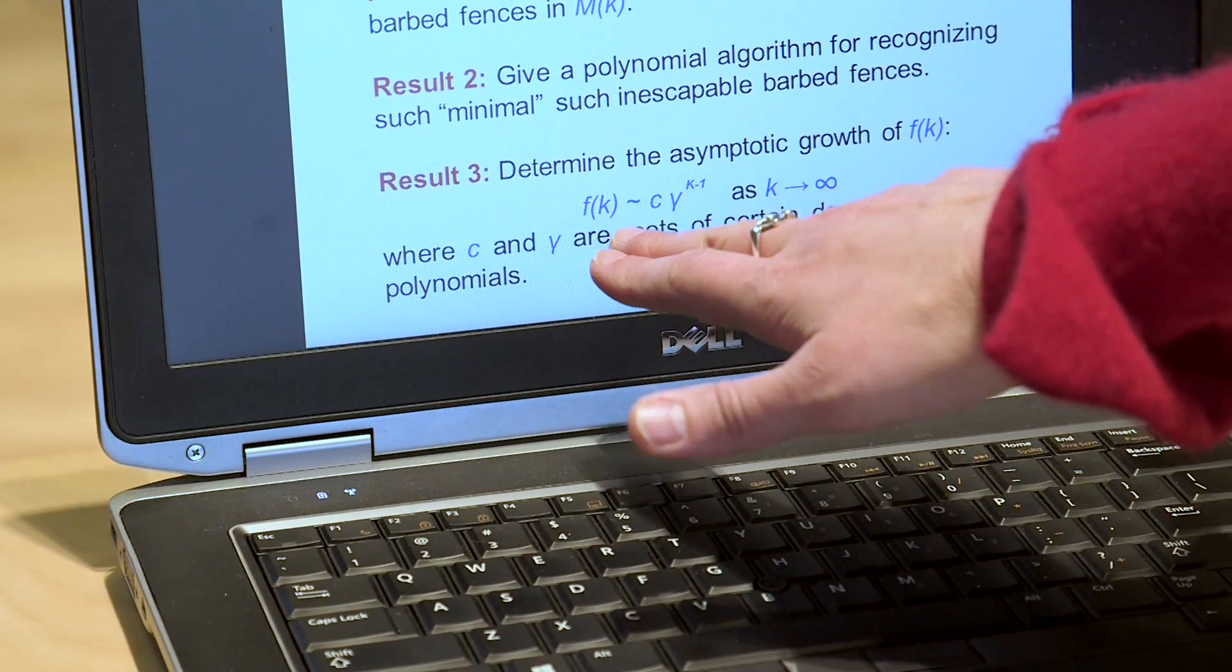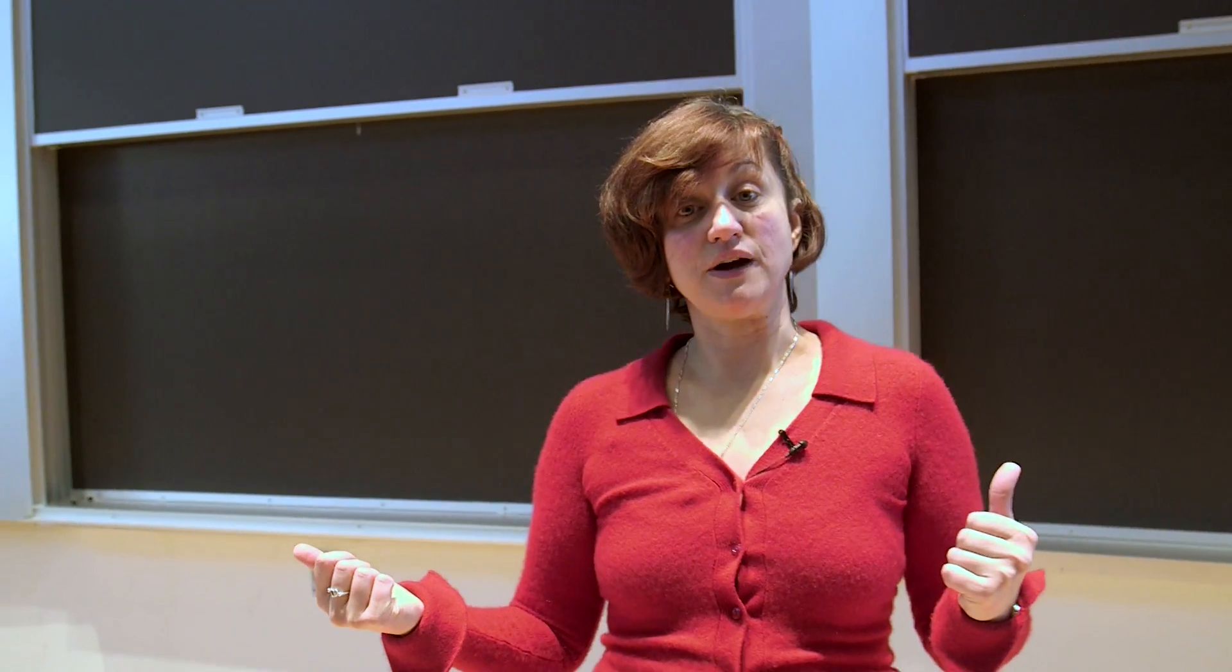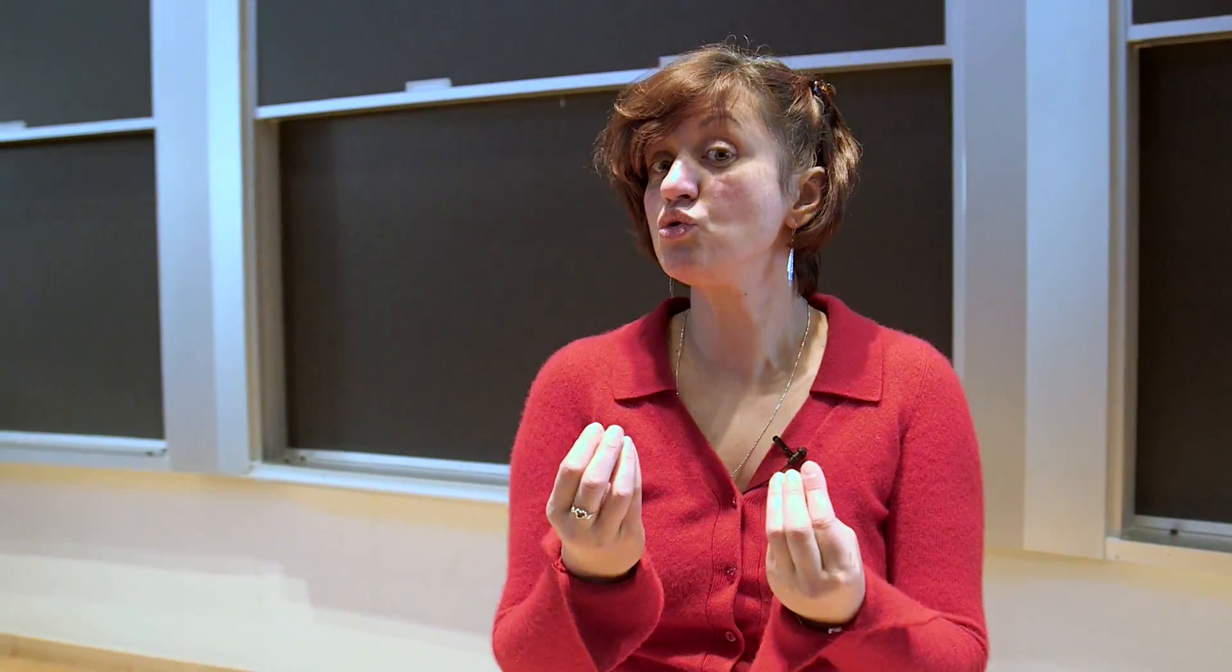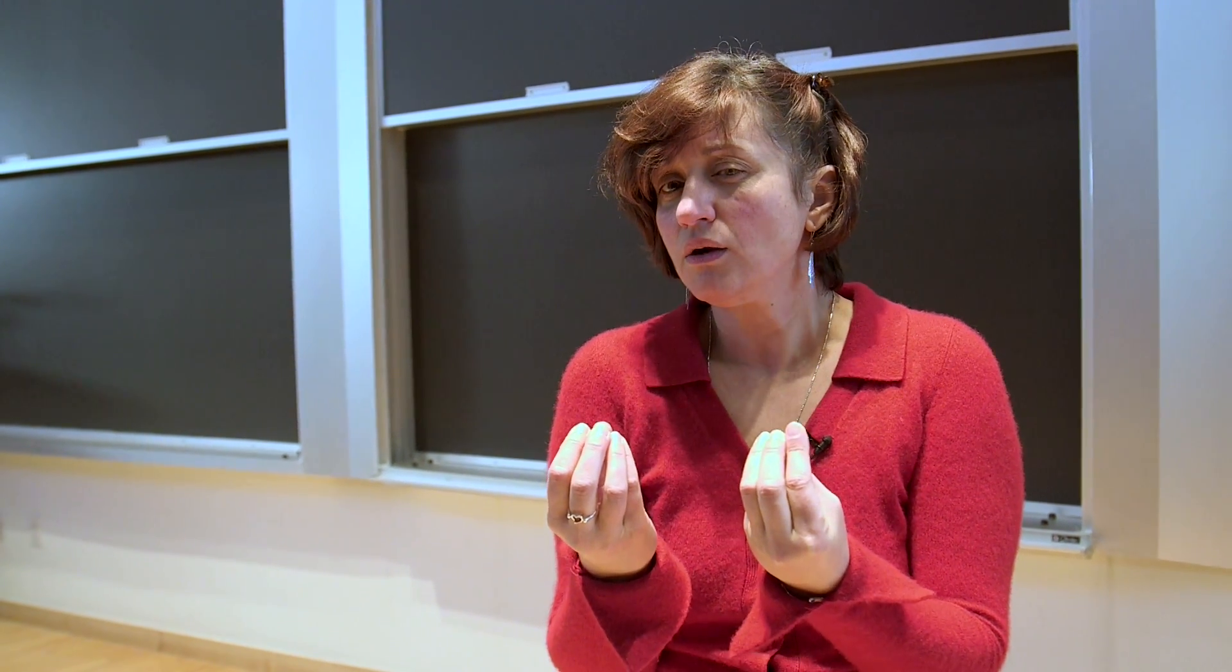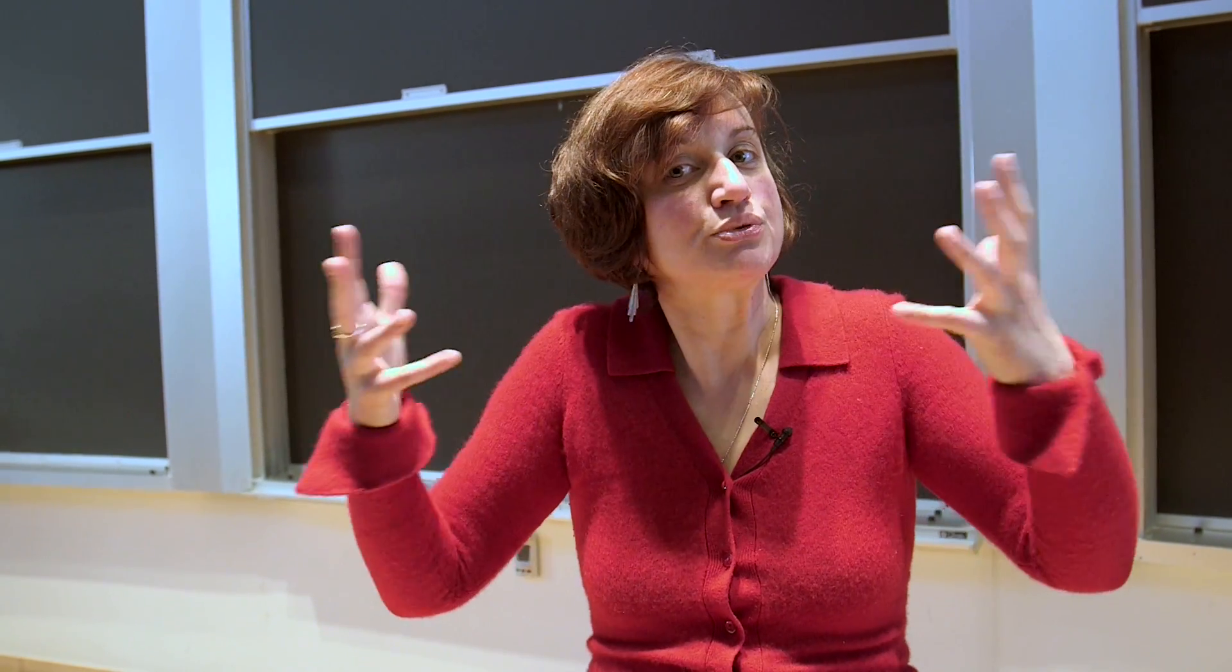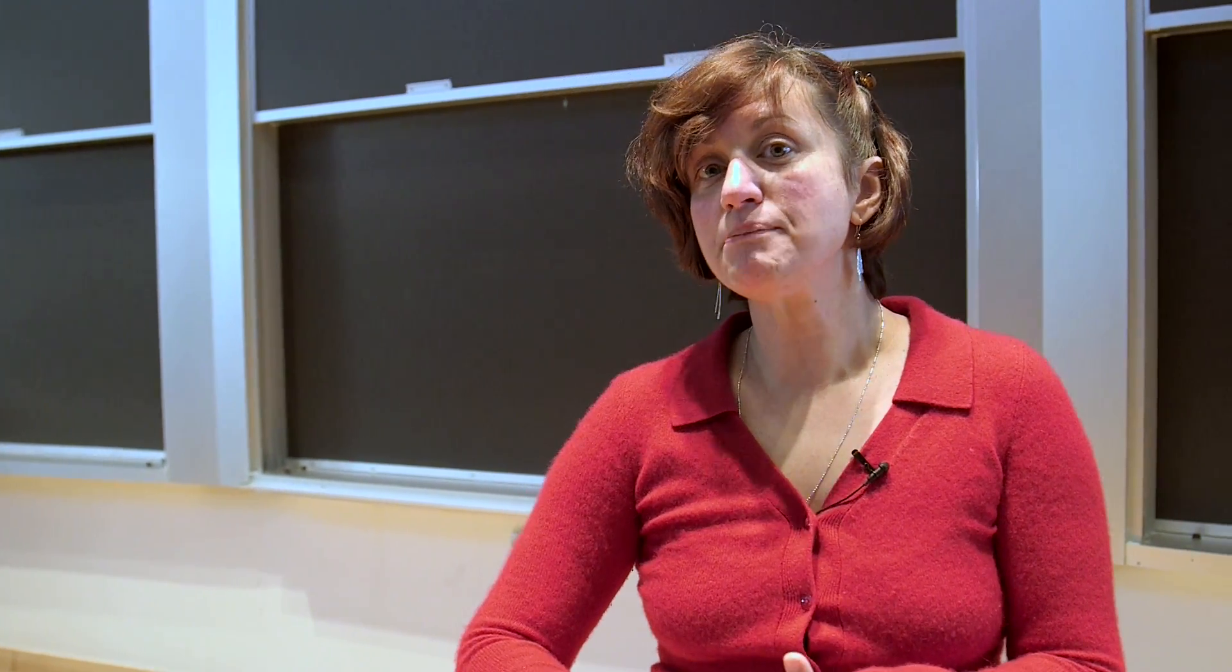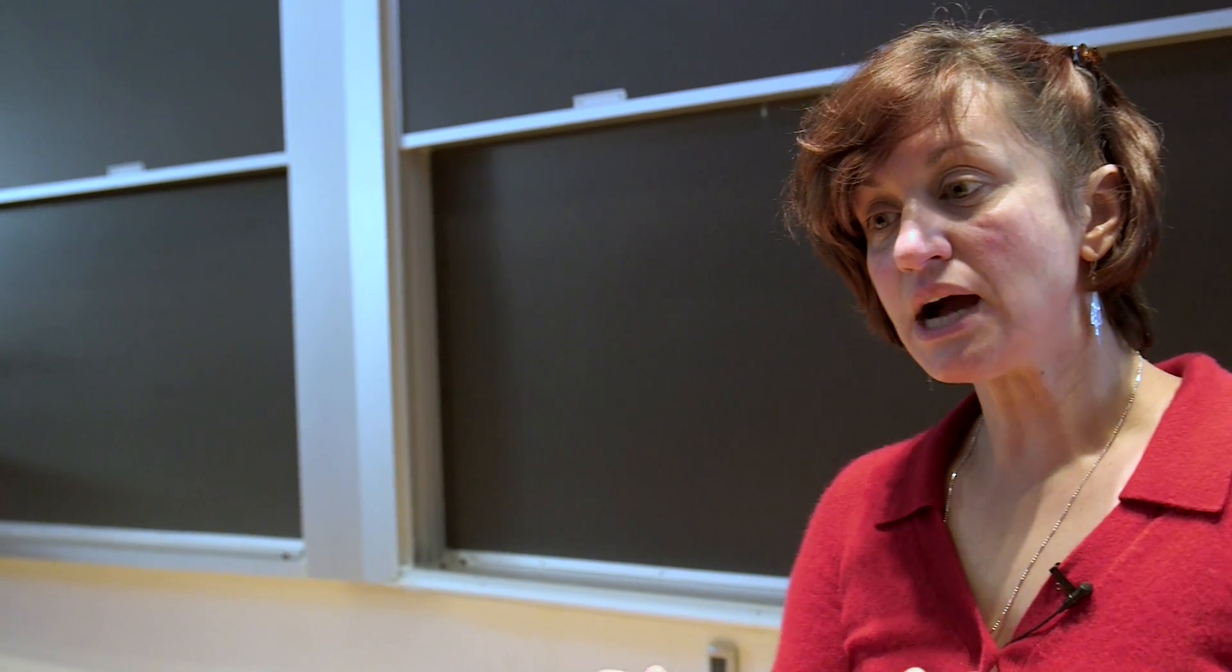So their result says that F of K, this function, grows approximately as an exponential function, C times gamma to the K minus one, where C and gamma, these two constants. And it's a funny thing what constants they are. They're just roots of some cubic polynomials. So the answer is pretty general. It does not give you an exact formula, but it does tell you something about the growth of those inescapable prisons. Every time you increase by one the number of cells, the total number of inescapable minimal prisons increases by this gamma.